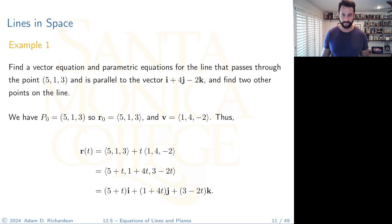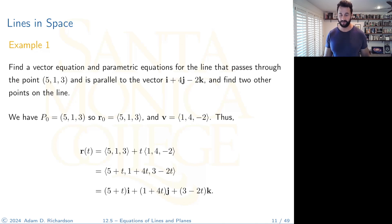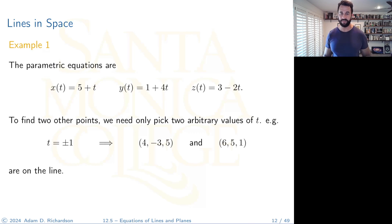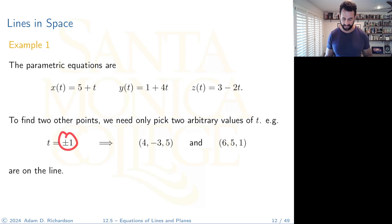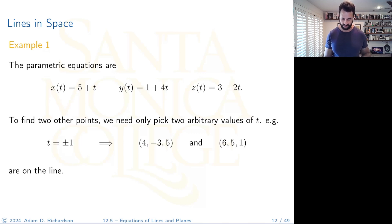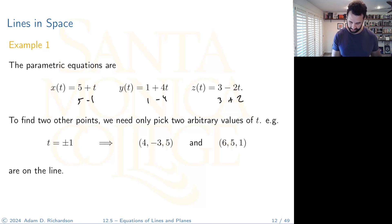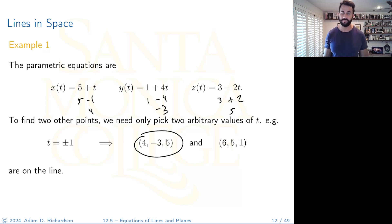From the vector equation we can easily peel off the parametric equations — just take the coefficients of the basis vectors. To find two other points, pick any values of t other than zero (t = 0 gives back the starting point). Using t = ±1 gives two additional points on the line.